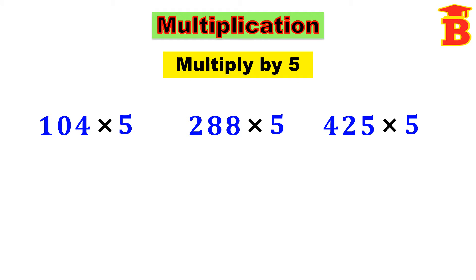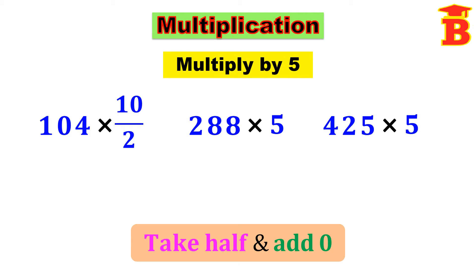First let us multiply 104 into 5. This 5 can be taken as 10 by 2. That means we have to divide this number by 2 and then multiply by 10. So the shortcut method is: take half and add 0. Divide by 2 means take half of this number, then multiply by 10, which means add 0 at the back.